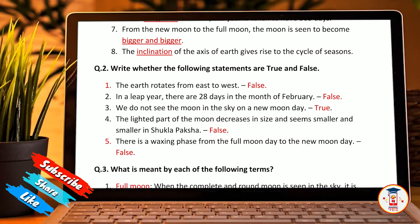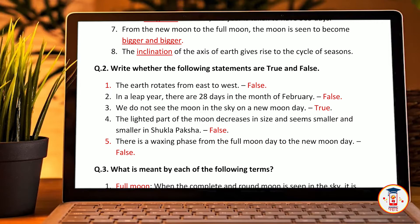In a leap year, there are 28 days in the month of February — false, there are 29 days. We do not see the moon in the sky on a new moon day — true. The lighted part of the moon decreases in size and it seems smaller and smaller in the Shukla Paksha — false. There is a waxing phase from the full moon day to the new moon day — false.